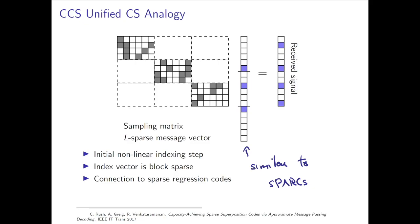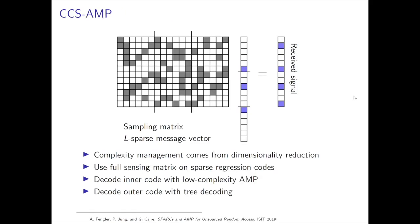This connection was first identified in the context of unsourced multiple access by Fengler, Jung, and Kyrie, and they realized that using a signal of smaller length, the matrix A was not quite as wide, and it was therefore amenable to approximate message passing. We reproduce the form of the approximate message passing algorithm that we've seen in previous videos on this slide.